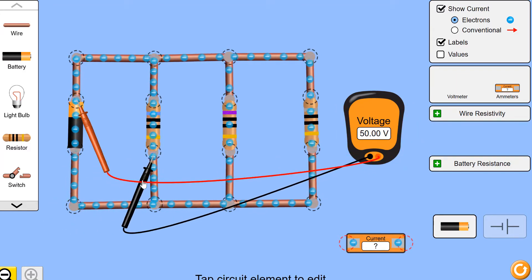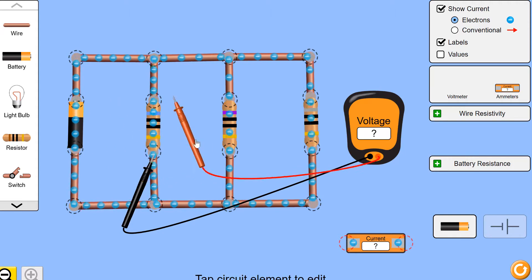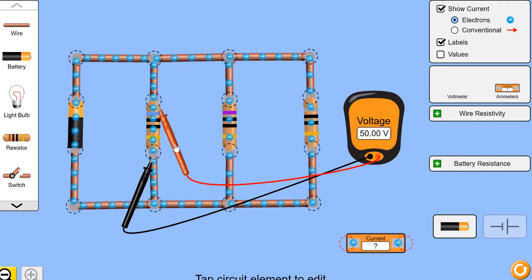Now I'm going to move them over to the second item in my circuit, which is resistor number one, R1. And I can see the voltage, the potential difference across R1.